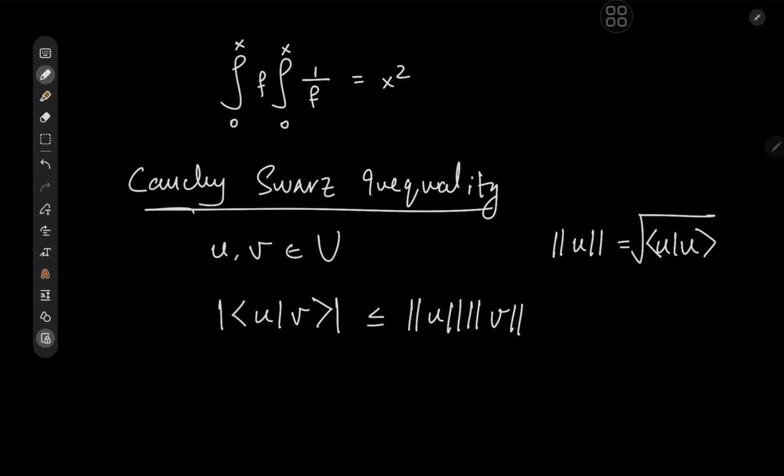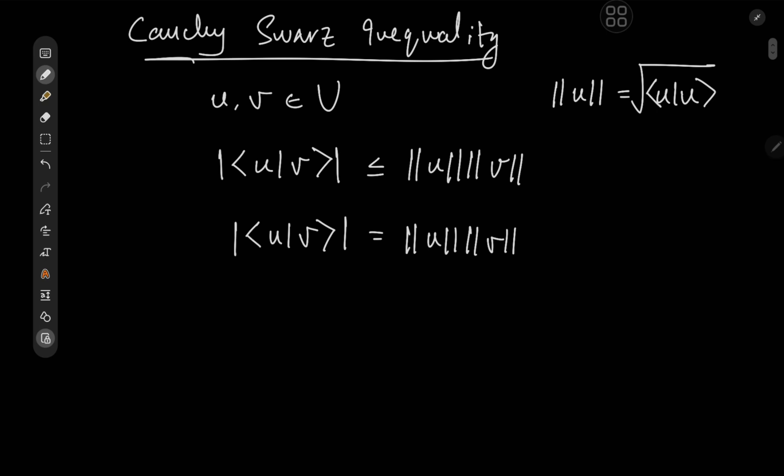For the integral equation, we're primarily concerned with the case of when equality occurs. If you have the absolute value of the inner product of u and v being equal to the product of the norms of u and v, then this implies that the two vectors are linearly dependent. So we could write u equal to alpha times v, or v equal to alpha times u, where alpha is some scalar.